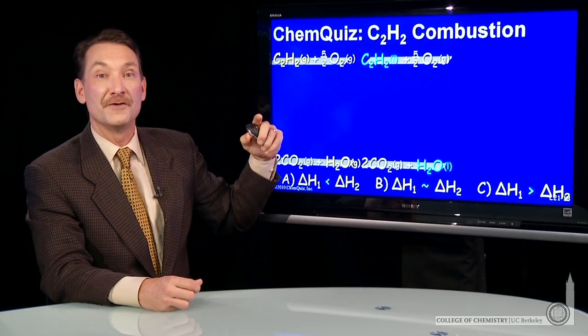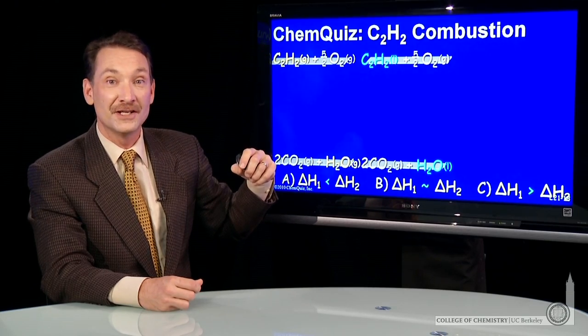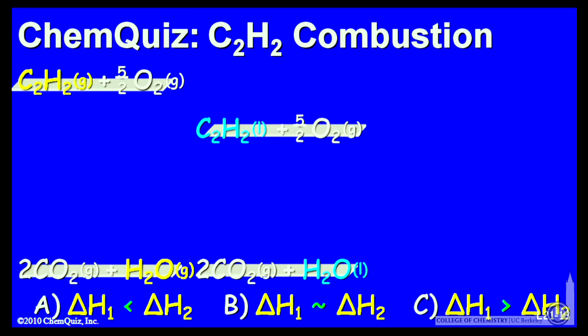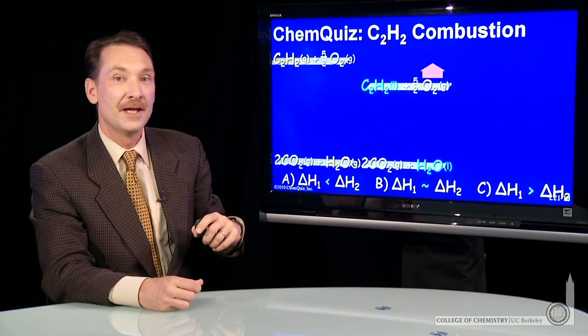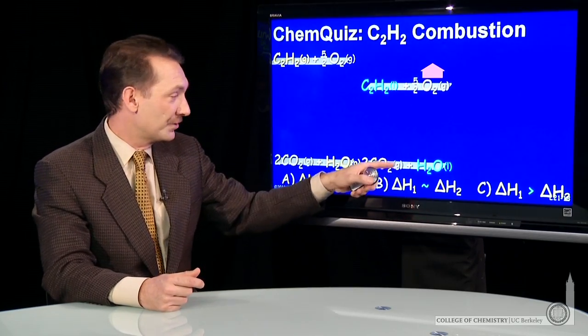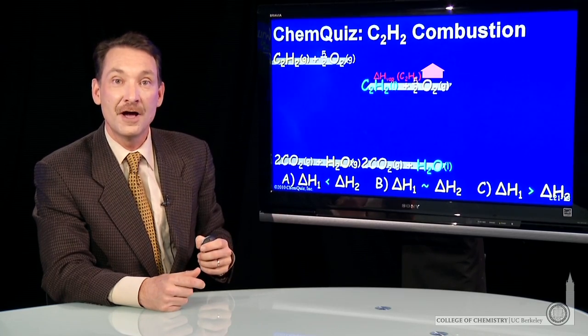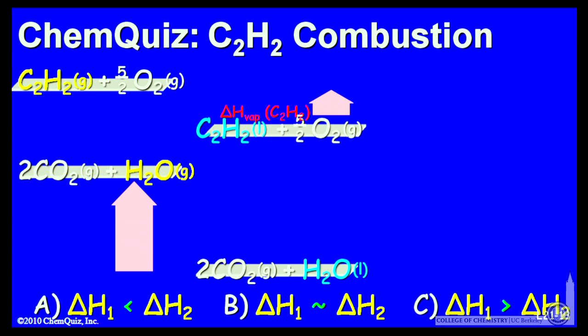Well, we know these two relative to each other, because the difference is the vaporization of the acetylene. So in order to vaporize acetylene, we'd need the enthalpy of vaporization of acetylene to convert between liquid acetylene and gaseous acetylene. We have the same type of conversion here. We have liquid water and gaseous water. So the difference between these two states is the enthalpy of vaporization of water. So the enthalpy of vaporization of water separates these two.